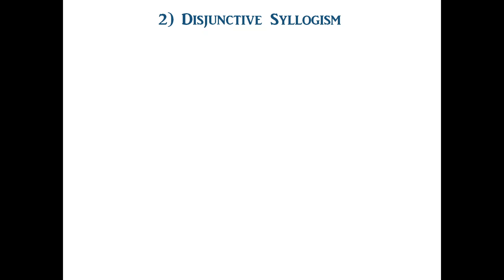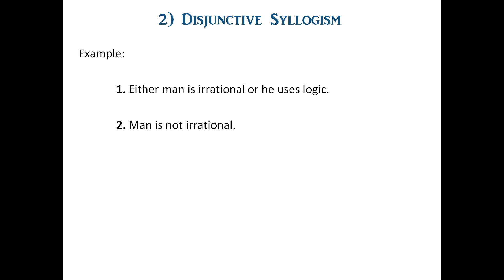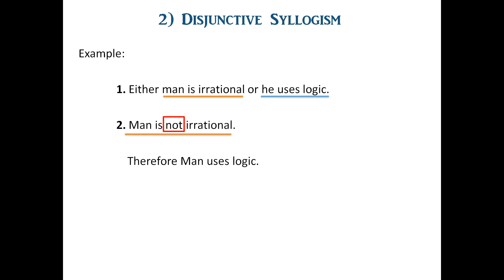Let us take an example. Either man is irrational or he uses logic. Second premise: man is not irrational. Therefore, man uses logic. Here you can see that in the first premise the two alternatives are 'man is irrational' and 'he uses logic.' If the first alternative is negated — man is not irrational — then we get the affirmation of the second: he uses logic.